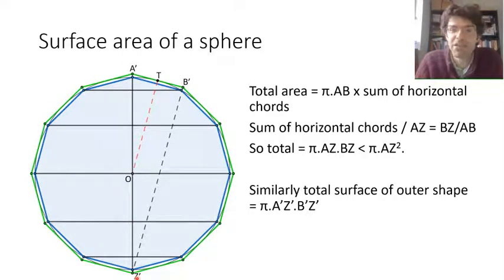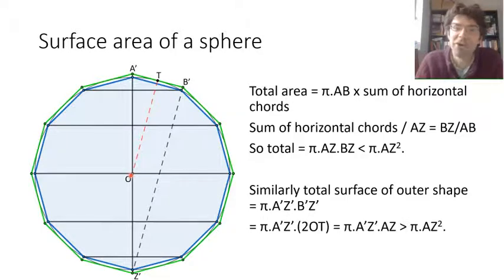He shows that B′Z′—now I'm adding dashes to show that we're in the outer polygon—that's actually the same as the diameter of the circle. If we contract the triangle A′B′Z′ by a factor of two, centering at A′, B′ goes to the tangent point and Z′ goes to the centre. So B′Z′ therefore is twice the radius of the circle, the diameter of it.